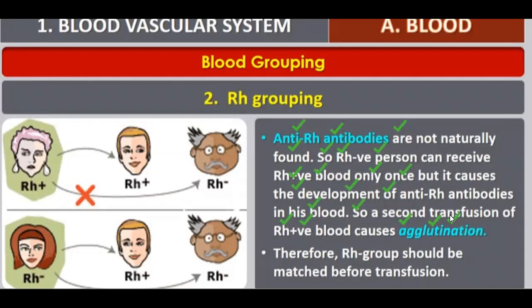What does this mean? Like coronavirus or any other pathogen entering our body for the first time causes infection. But after the first time, the second time, third time it enters our body, our body will have already developed antibodies and will be prepared to fight against these foreign substances. So agglutination happens. If you receive RH positive blood for the first time as an RH negative person, there is no problem. First time, no problem.